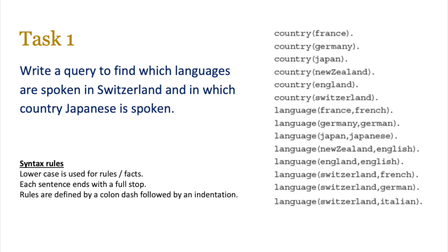This gets you to experiment with writing a query. Try to write a query to find which languages are spoken in Switzerland and in which country Japanese is spoken. The syntax rules are on screen. Pause the video, have a go, and when you're ready continue. Hopefully you managed to get: language, Country, Japanese for the second one. The first one would be: language, Switzerland, L — with a variable with a capital L called Language.